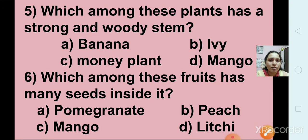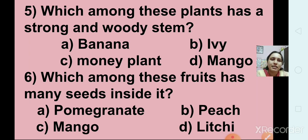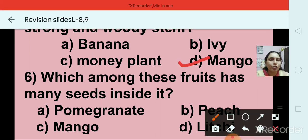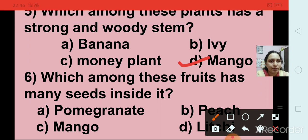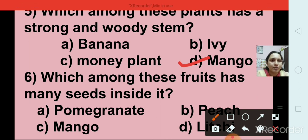Question number 5: Which among these plants has a strong and woody stem? Options are banana, ivy, money plant, and mango. The right answer is option D, that is mango. Mango tree has a strong and woody stem. Banana has a soft stem, and ivy and money plants have a weak stem.